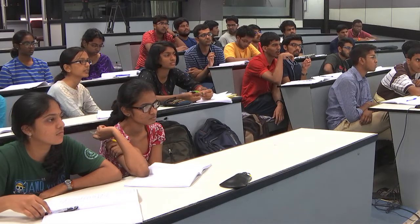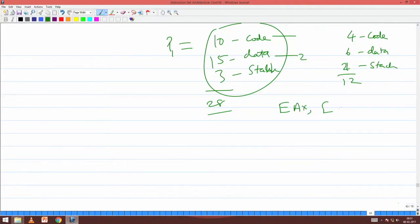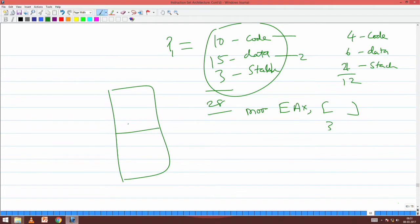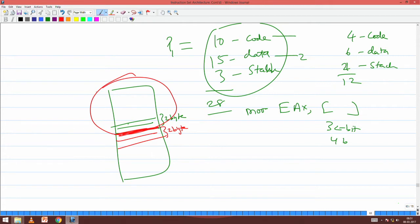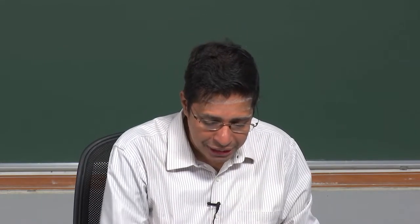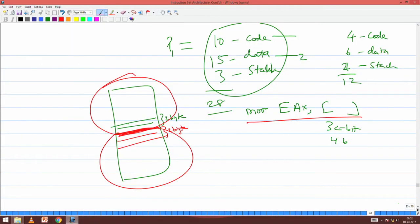A very simple example: suppose I am accessing MOV EAX, some address - a 32-bit, 4-byte instruction. Assume 2 bytes are in one page and the remaining 2 bytes are across the page boundary in the next page. Now I have allocated only one page for data. I load this page and start executing - it gets 2 bytes, but the remaining 2 bytes cause a page fault. I go to the page fault handler, load the other page, re-execute - then page fault again for the first page. I will just be ping-ponging. One page comes, then goes, another page comes - this move instruction will never complete.